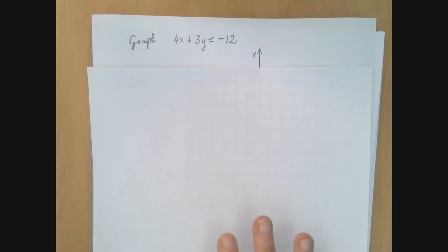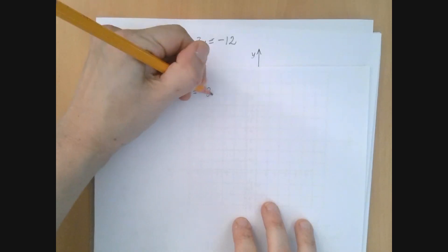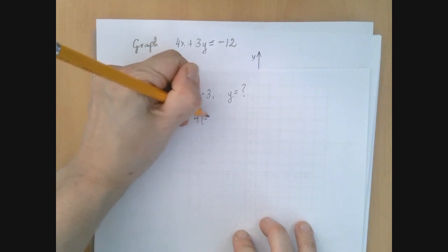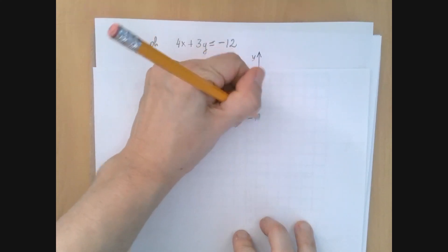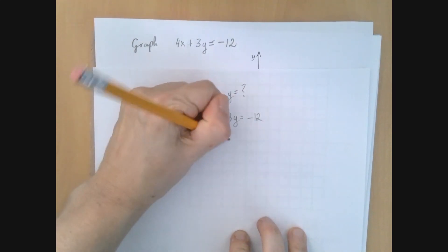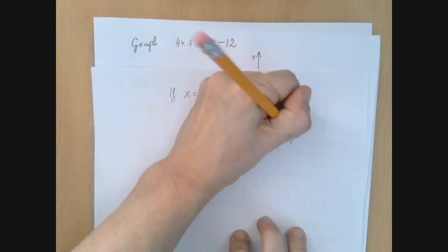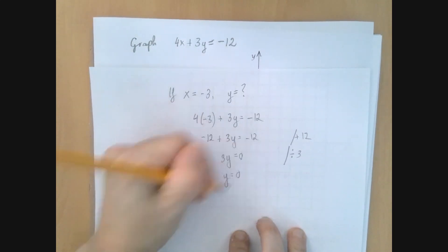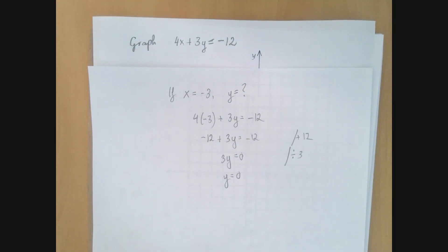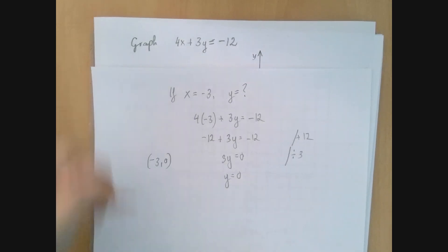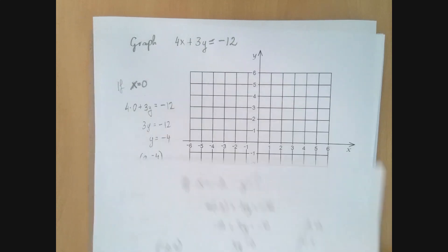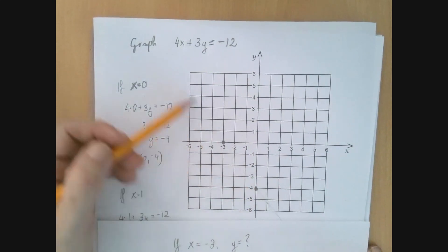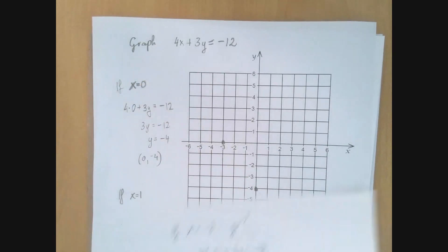So let's try x equals negative 3. If x equals negative 3, then we're putting x equals negative 3 into this equation and solve for y. So we have 4 times negative 3 plus 3y equals negative 12. So negative 12 plus 3y equals negative 12. We add 12 to both sides. 3y is 0. We divide both sides by 3. So y equals 0. So what we got is when x is negative 3, then y is 0. So we found the point (-3, 0). Negative 3, 0.